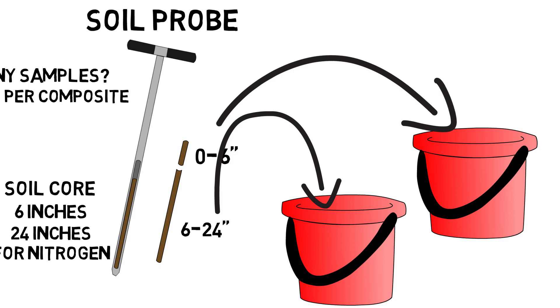Why would you need to do this? Well, in the 0 to 6-inch sample, you're looking for different nutrients, like phosphorus and potassium, which are non-mobile nutrients. But nitrogen, since it's mobile, will be found deeper in the profile. If you were to calculate phosphorus and potassium concentrations based on a 24-inch sample, your concentrations wouldn't be right, and your fertilizer recommendation would be wrong.